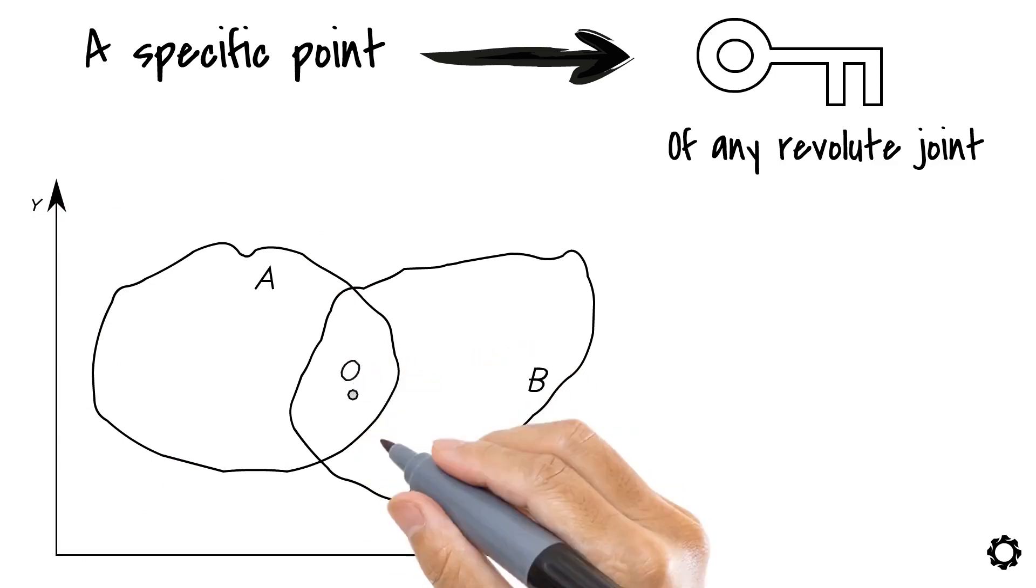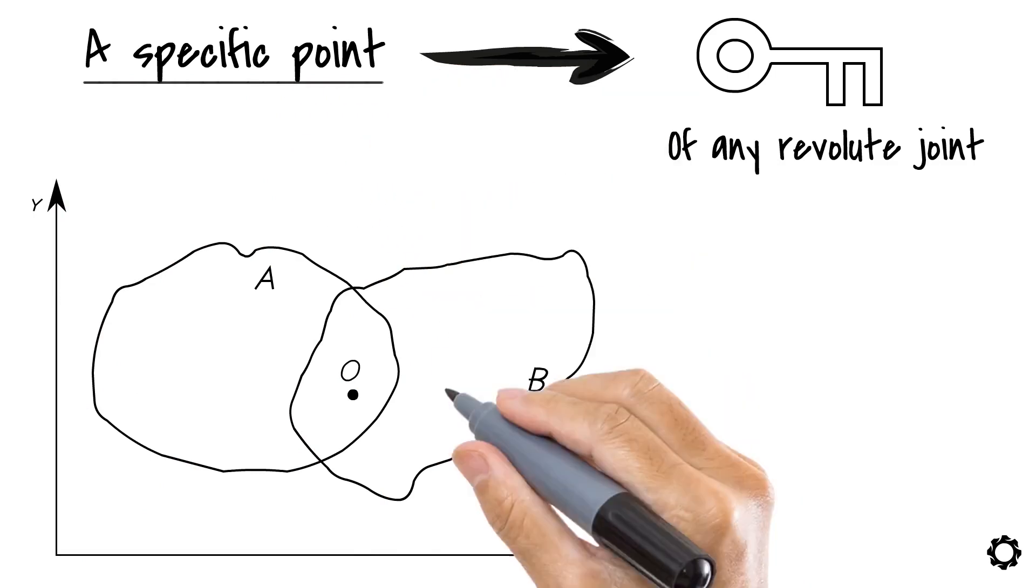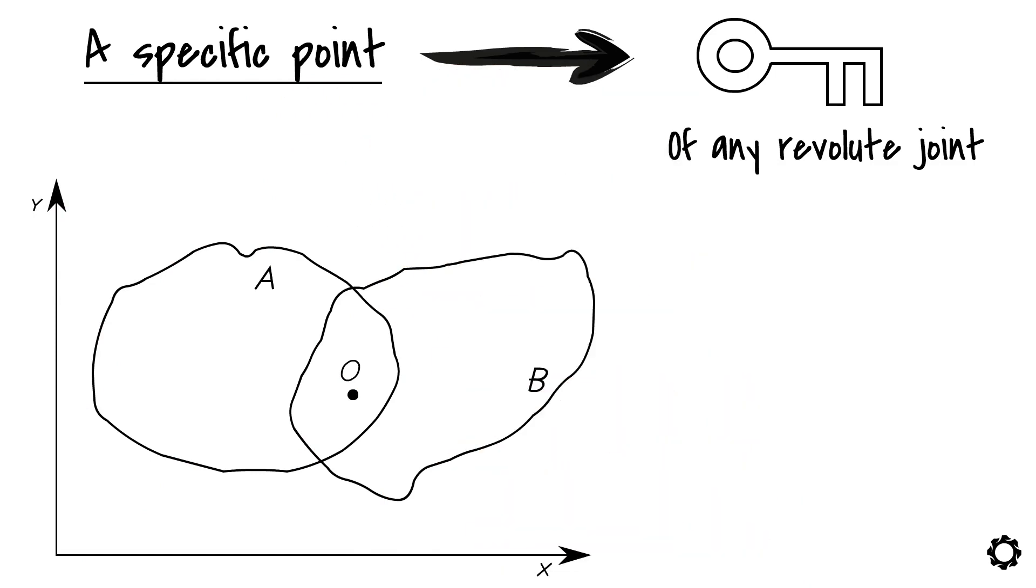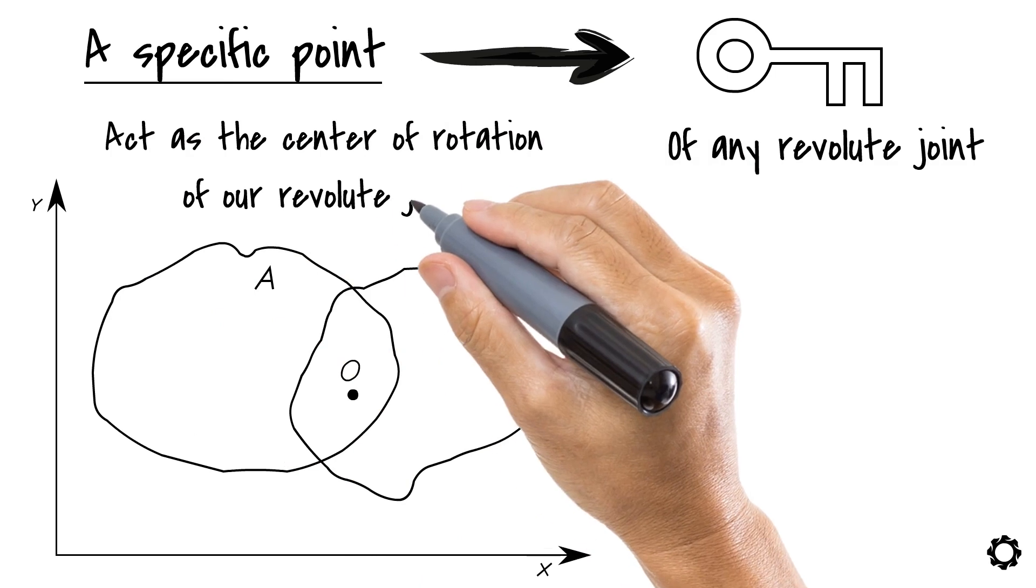Then, we need the point, yes, the point we have been talking about. This is the point that will act as the center of rotation of our revolute joint.